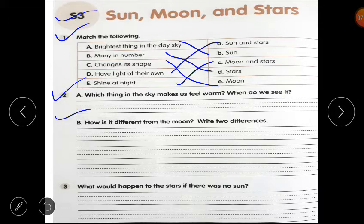Question number B: How is it different from the moon? Yeh moon se kaisa different hai? Write two differences. Aapko two differences write karne hai. Sun has its own light, but moon does not have its own light. It throws back the light of the sun. Clear?